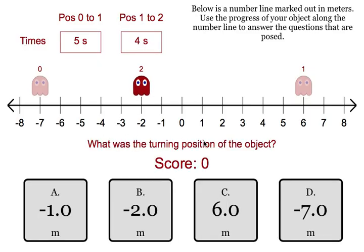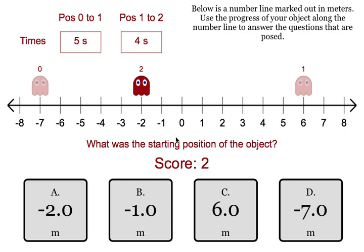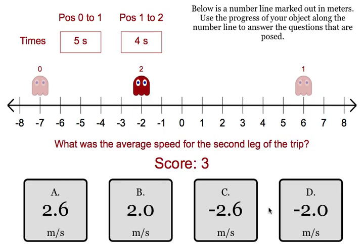The first thing it wants is the turning position, so that is obviously at the positive 6 mark. They want the ending position, so that's at the negative 2 mark. They want the starting position, and that was at the negative 7 mark. So we've got the three easy ones out of the way.